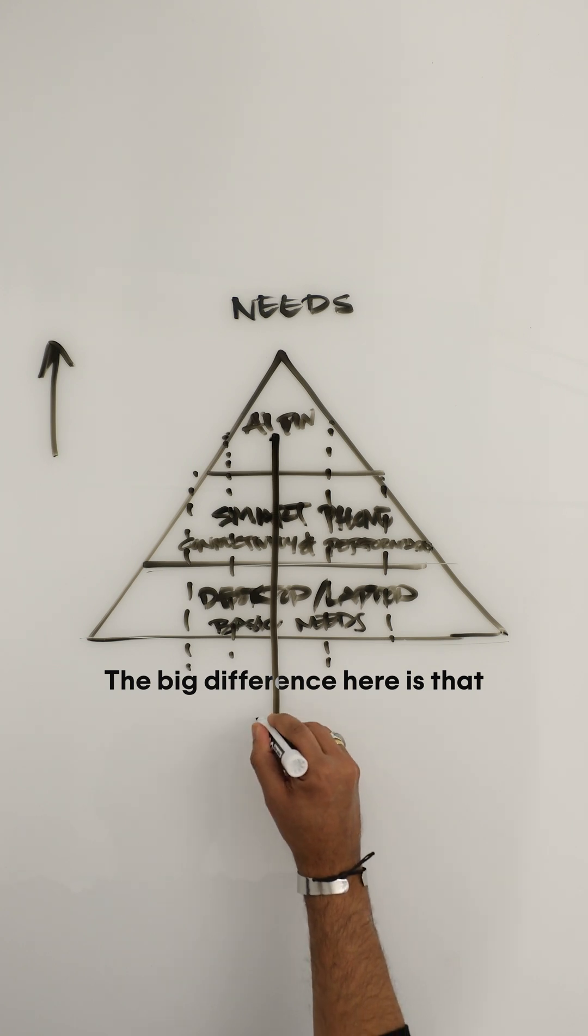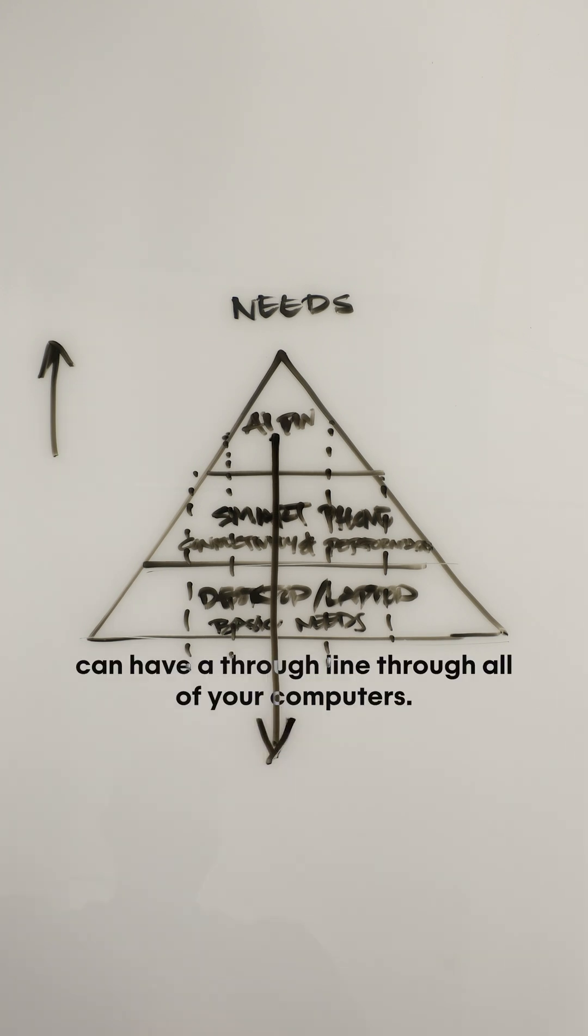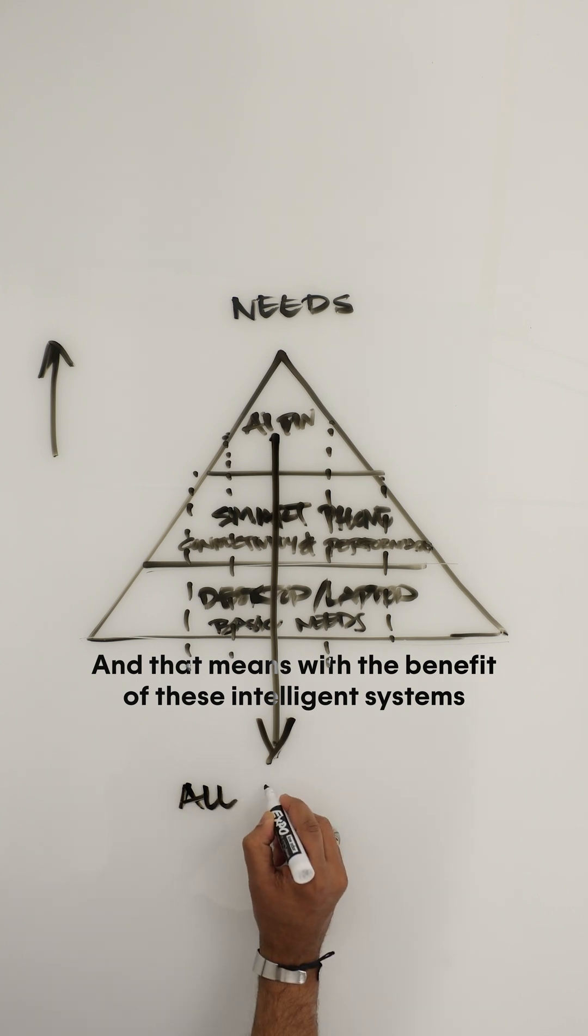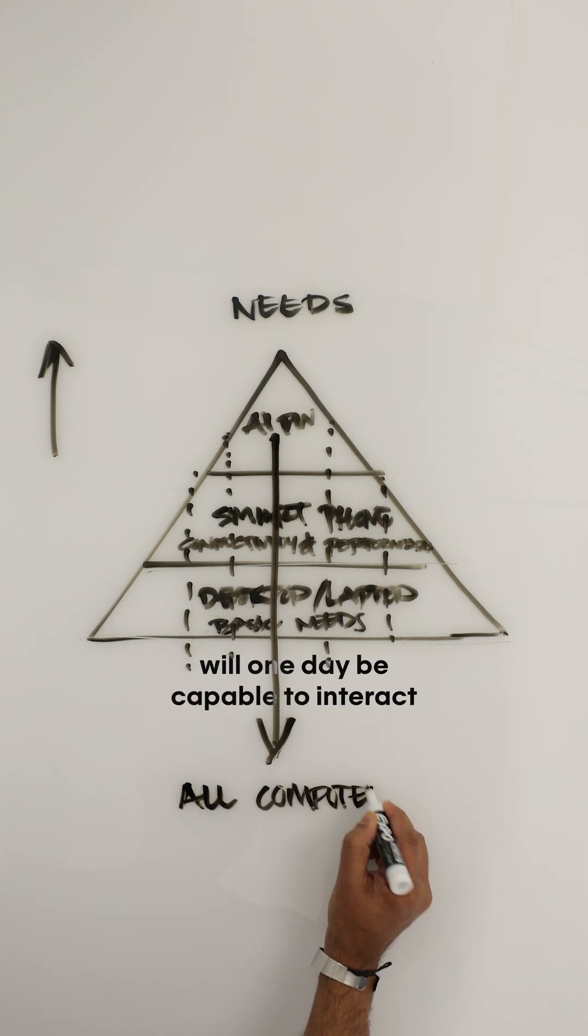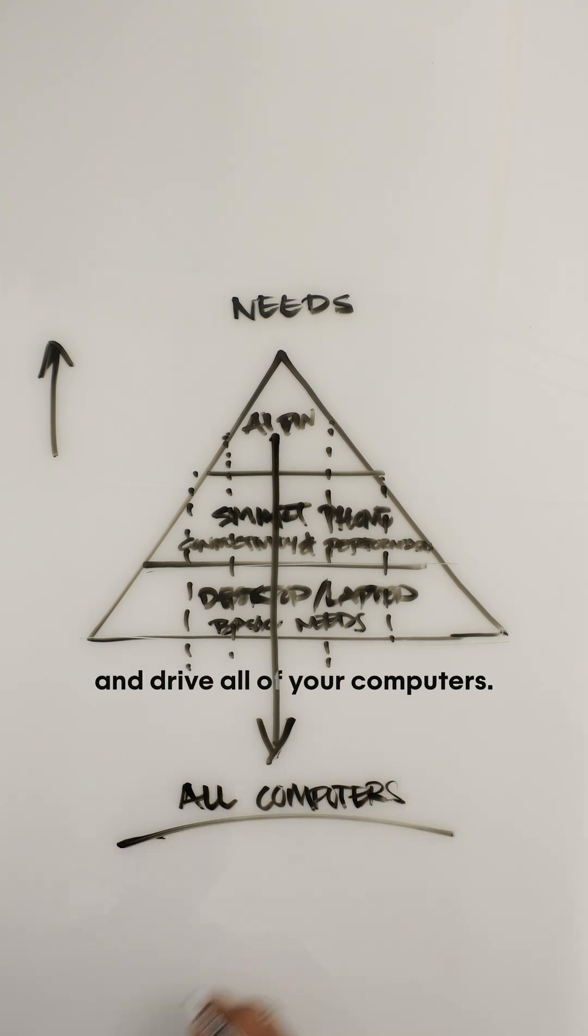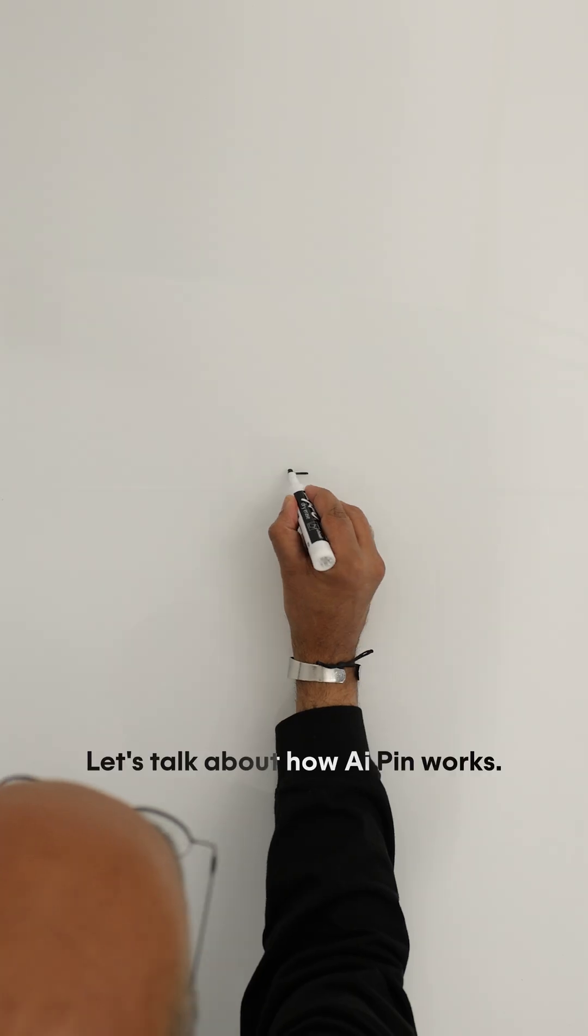The big difference here is that AI Pin can have a through line through all of your computers. And that means, with the benefit of these intelligent systems, your AI Pin will one day be capable to interact and drive all of your computers.